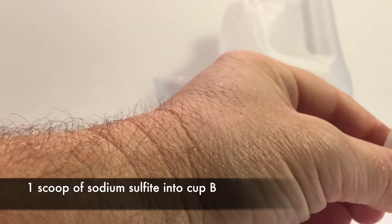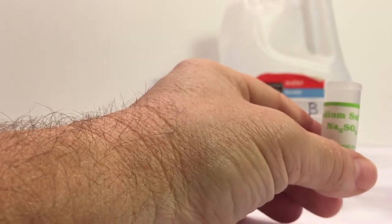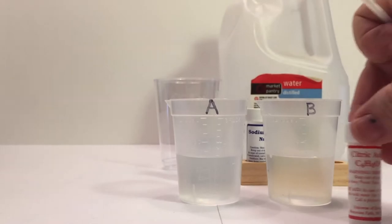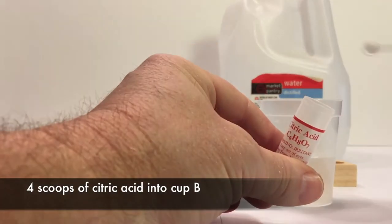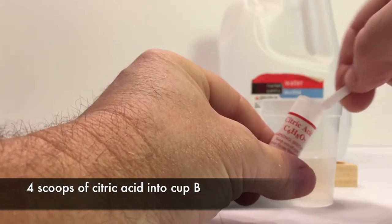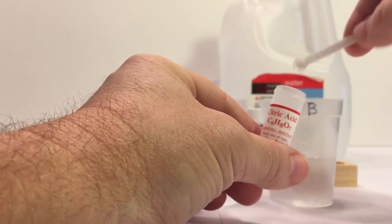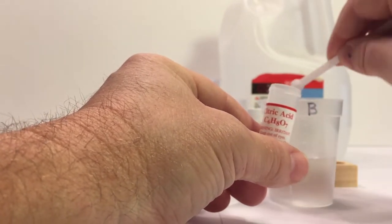So all these chemicals come really nicely in small little containers and they're labeled very well. And so you use the scoops and you're going to put these into B. And we're going to do four scoops of the citric acid. And I did one scoop of the sodium sulfate.